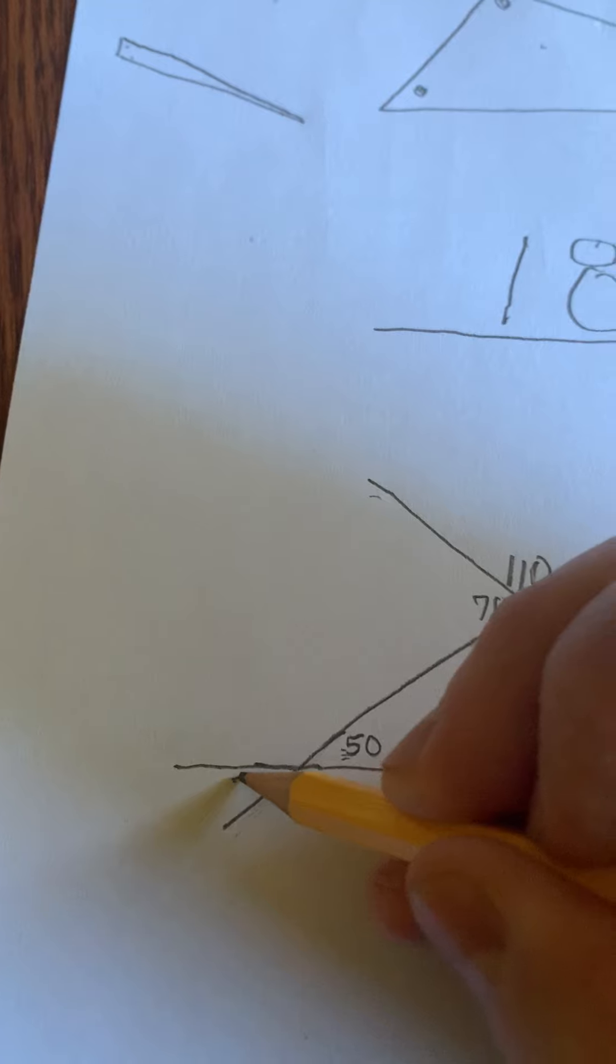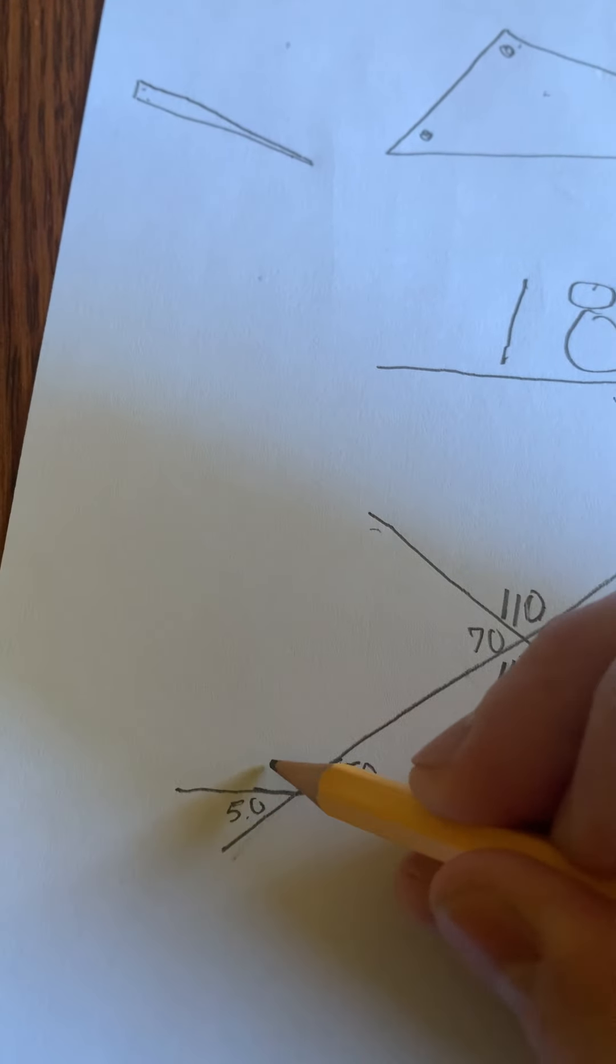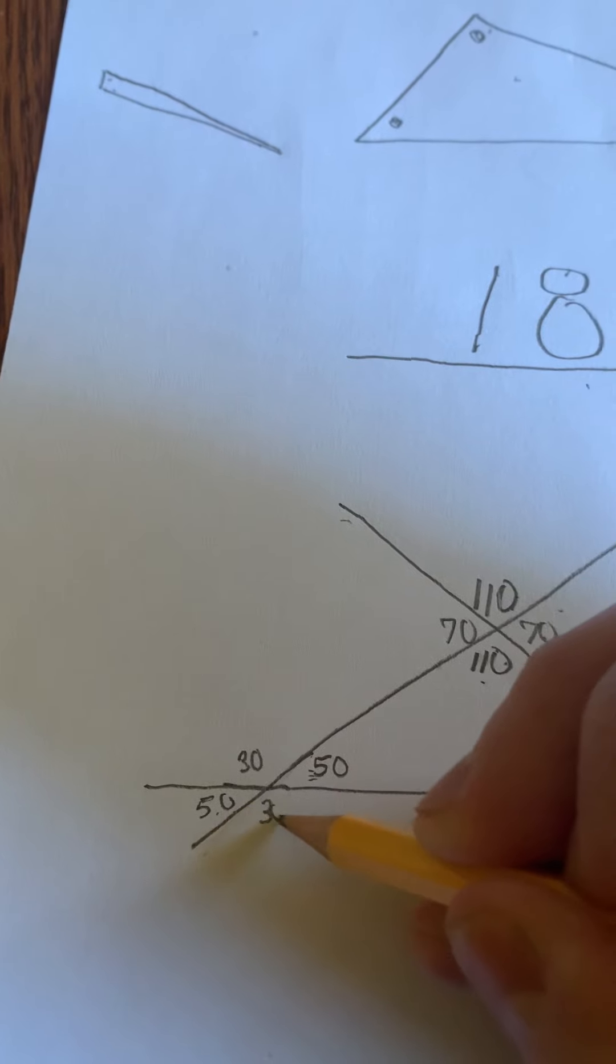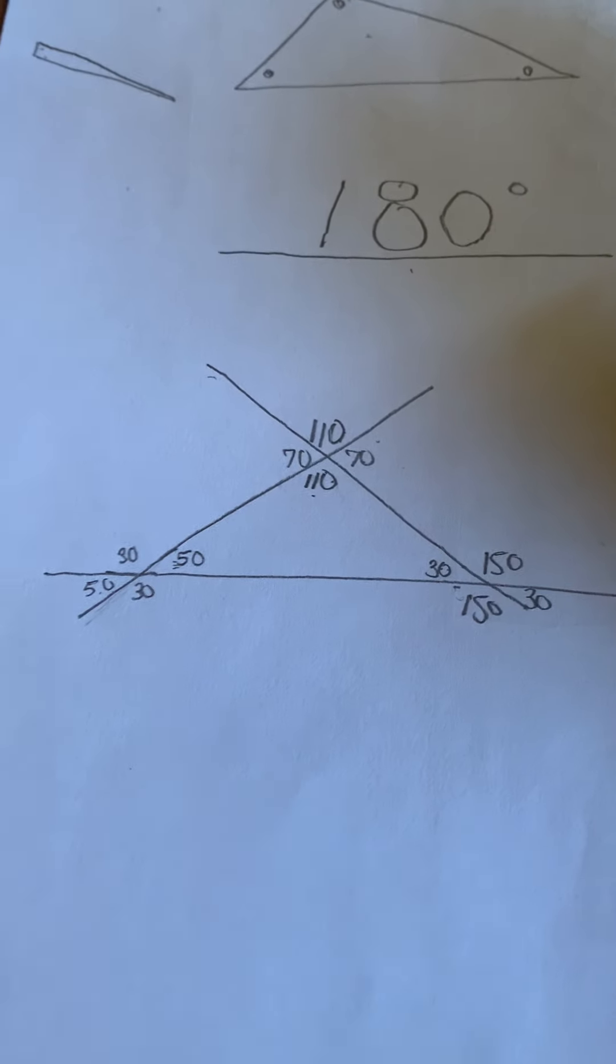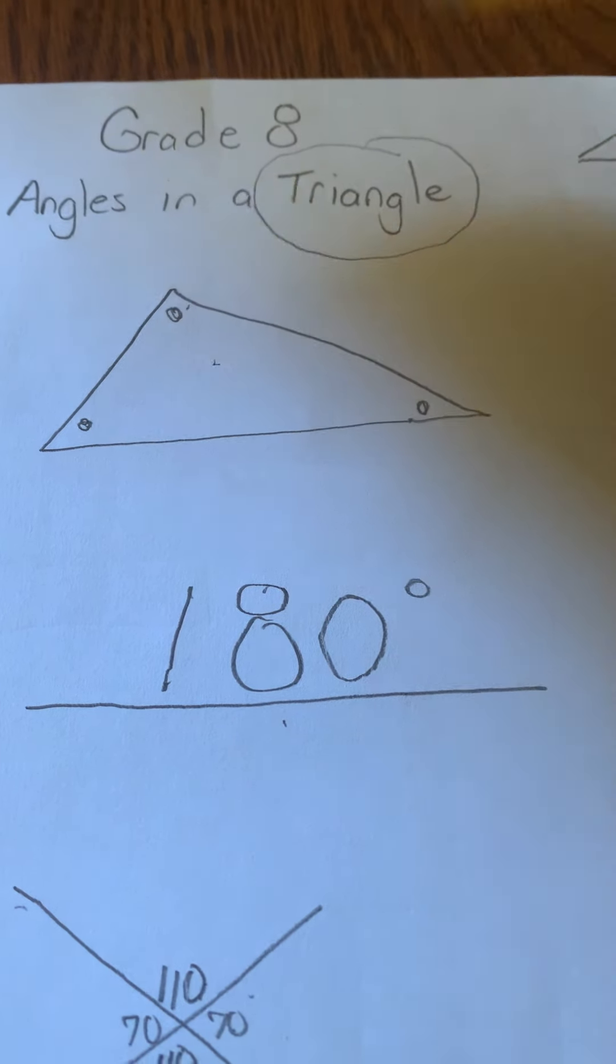From there, now I can finish up the rest of this and say that this is 50 degrees. I know that 180 minus 50, this also has to be 30. This is 30. And I filled in every angle on this page by adding in that extra piece today that we've given you with angles in a triangle.